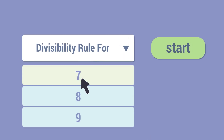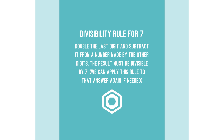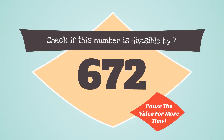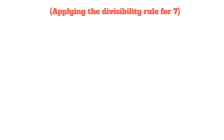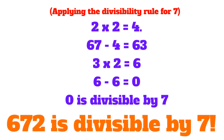Let's now look at the divisibility rule for 7. We double the last digit and subtract it from the number formed by the remaining digits. The result must be divisible by 7. For example, check if 672 is divisible by 7. The last digit doubled is 2×2=4, and 67−4=63. Applying the rule again: 3×2=6, and 6−6=0. Since 0 is divisible by 7, 672 is divisible by 7.